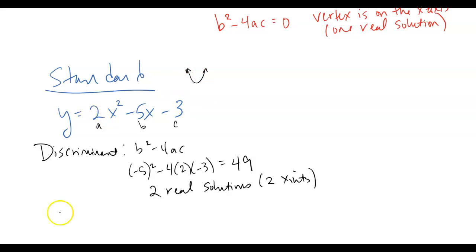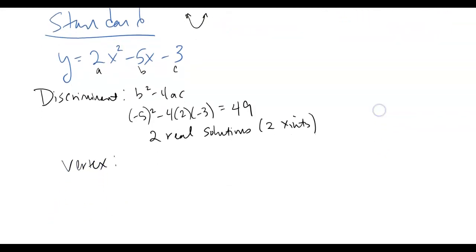So another good thing to find might be the vertex and the intercepts. So if I want to find the vertex, we're going to use the formula from above, minus b over 2a. So if I take minus b over 2a, so that's going to be negative b would be a 5 over 2 times 2, which is 4. So I just took the numbers from above and dropped them into that formula. So the x part of my vertex is 5 fourths.